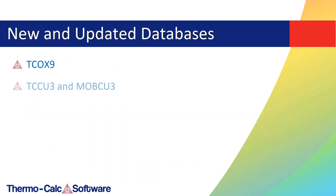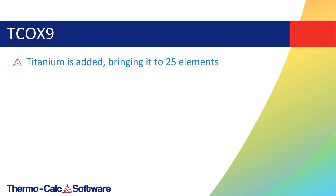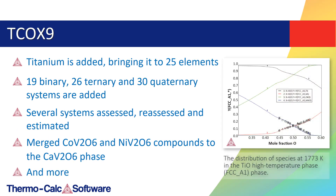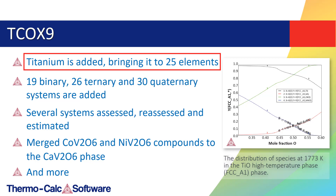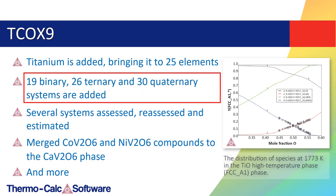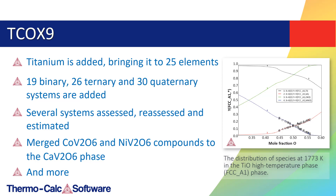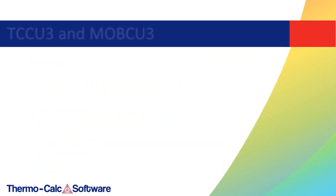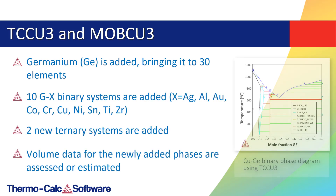Thermo-Calc 2019b introduces three new databases and two updated databases. The thermodynamic database for metal oxide solutions including slags, TCOX9, adds titanium, bringing it to a 25-element framework. The database also adds 19 binary systems, 26 ternary systems, and 30 quaternary systems, along with several other updates. Two new copper databases are released with Thermo-Calc 2019b: the thermodynamic copper database TCCU3 and the companion mobility database MOBCU3.